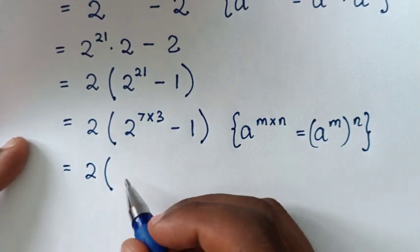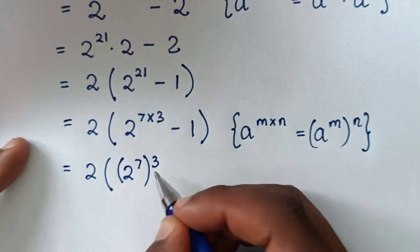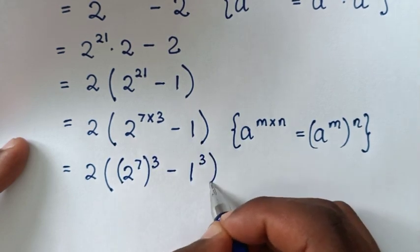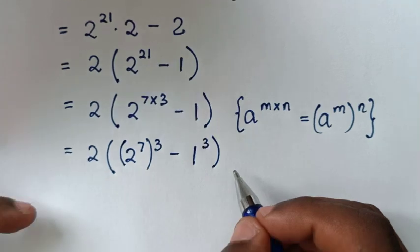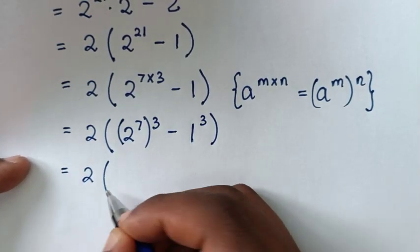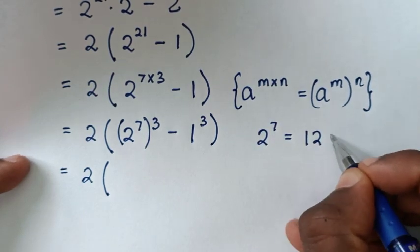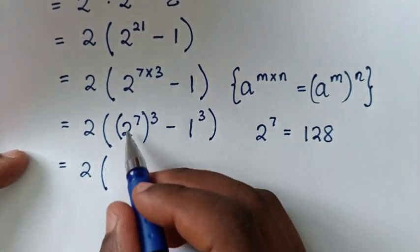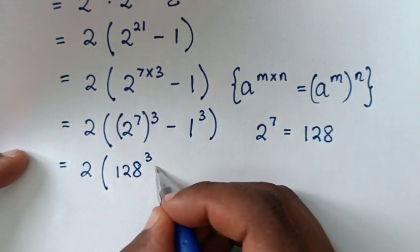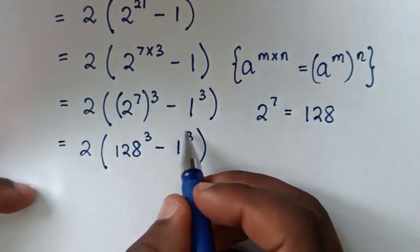So it will be equal to 2 bracket, 2 to the power of 7 times 3 is the same as 2 to the power of 7, bracket, to the power of 3, then minus 1. And 1 is the same as 1 to the power of 3. Now 2 to the power of 7 equals 128, so we have 128 to the power of 3, minus 1 to the power of 3, inside the bracket.